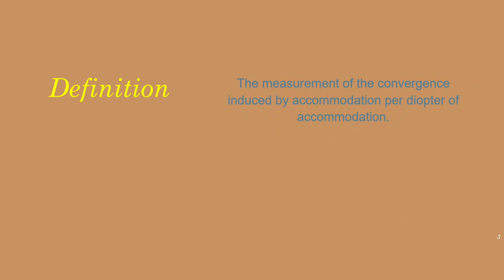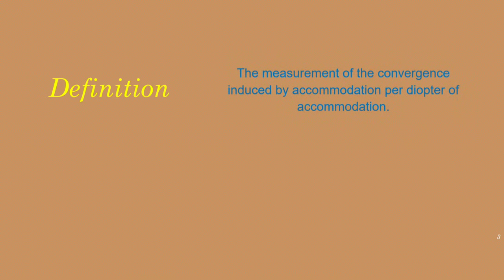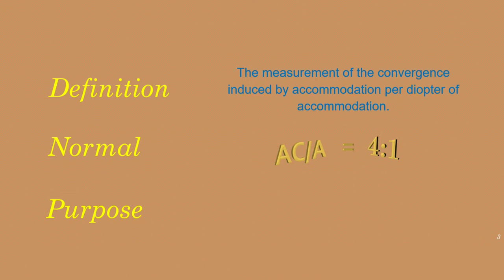What is the definition of AC/A ratio? It is the measurement of convergence induced by accommodation per diopter of accommodation. The normal value of AC/A ratio is 4:1. What is the purpose of AC/A ratio? It is to determine the change in accommodative convergence that occurs when the patient accommodates or relaxes the accommodation by a given amount.